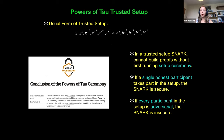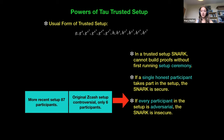Our solution is most efficient when we have a trusted setup. The most commonly used trusted setup at the moment is called Powers of Tau, initialized by the Zcash group. With a trusted setup SNARK, we can't build proofs without first running a setup ceremony. If a single honest participant takes part in that ceremony, the resulting SNARK will be secure — but if every participant is adversarial, it won't be. There was controversy over the first Zcash setup, largely because they only had six participants. In the more recent setup, they got 87 participants, which seems more reasonable.